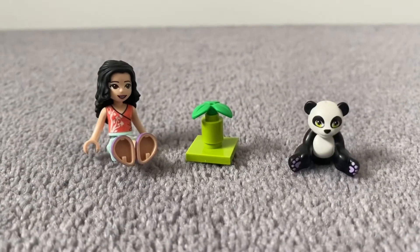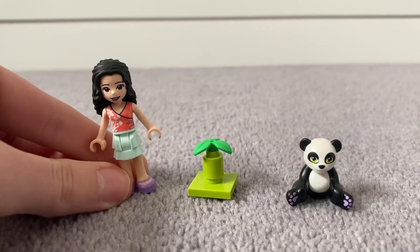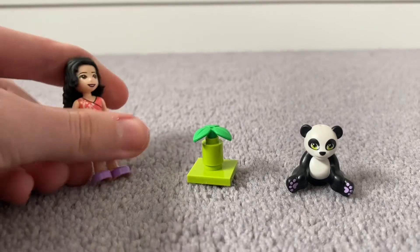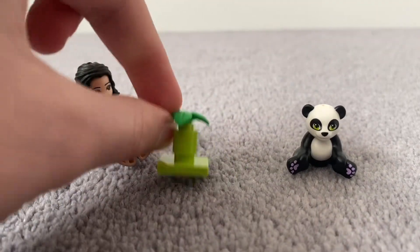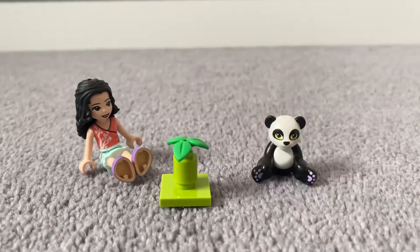So yeah, let's just show you a close-up of our LEGO. And yeah, we did it. That is the LEGO minifigure Emma, pop you back down there. That is the little bamboo shoot and this is the panda. So whoopsie, fell over.